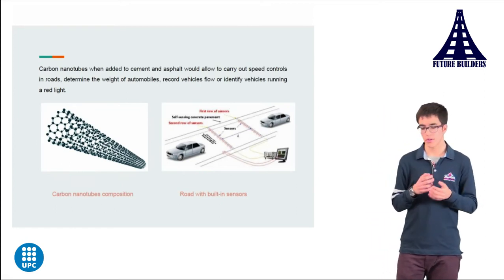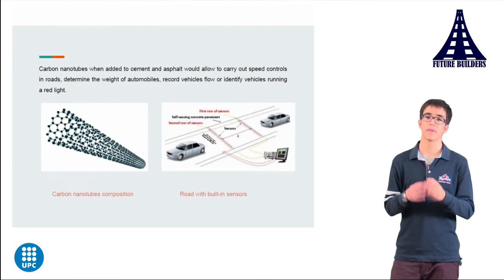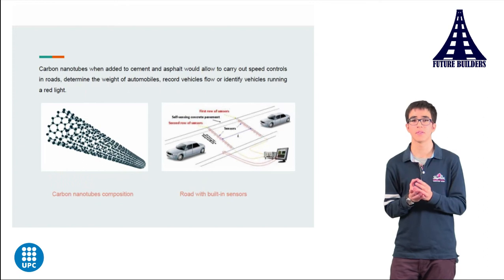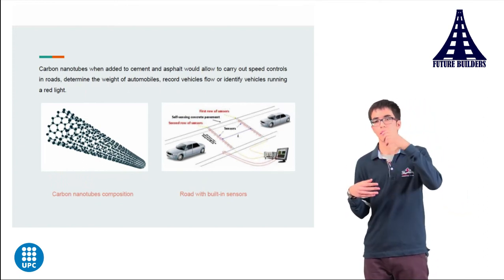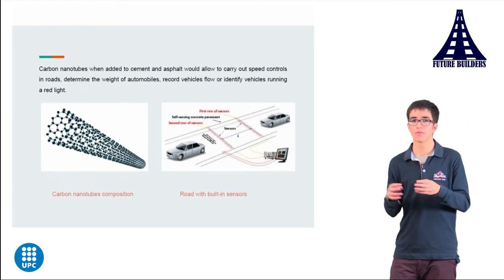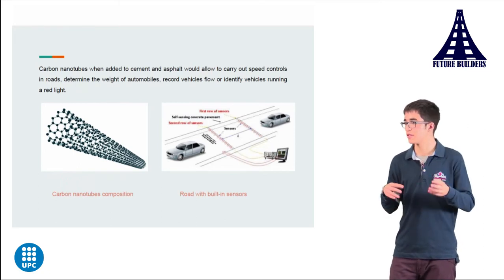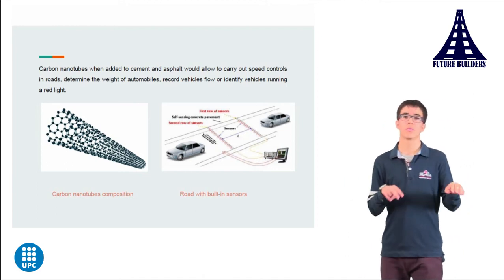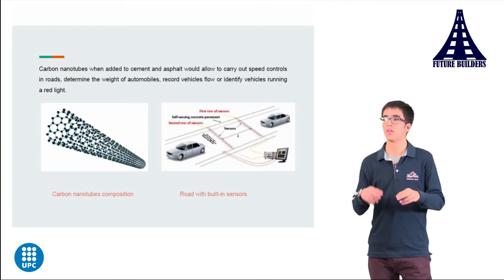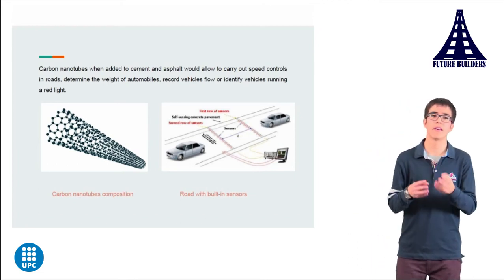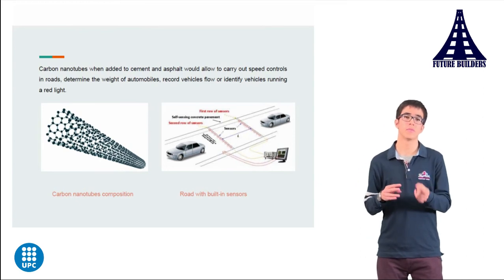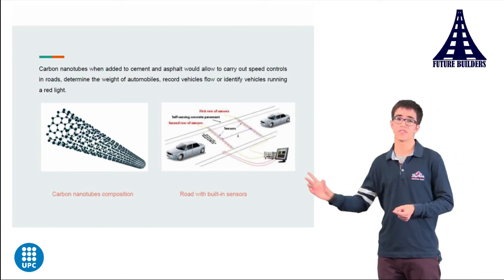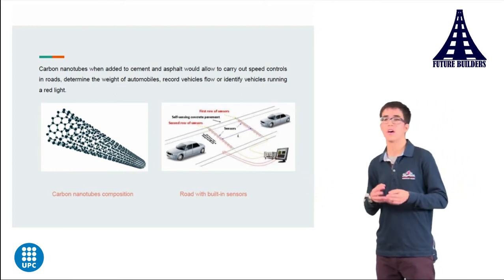Another application of multifunctionality is in roads. Multifunctional materials in roads can provide advantages such as carrying out speed controls, detecting the weight of vehicles flowing through a road, and detecting if any car commits an infringement. As shown in the image, the road can provide information and any specification we want about a passing vehicle.